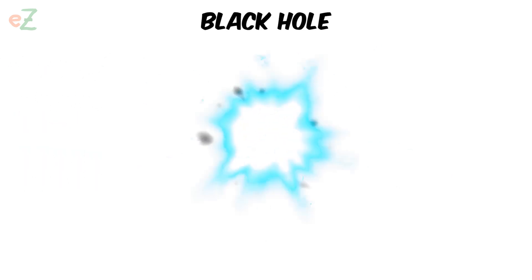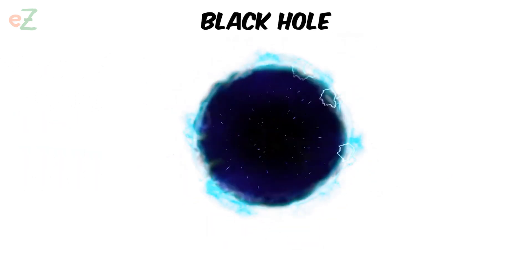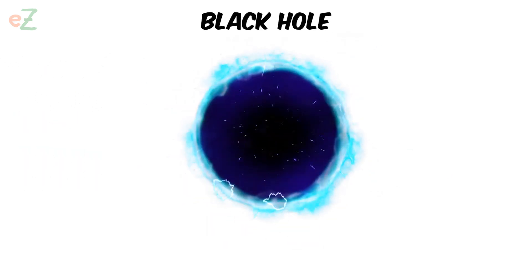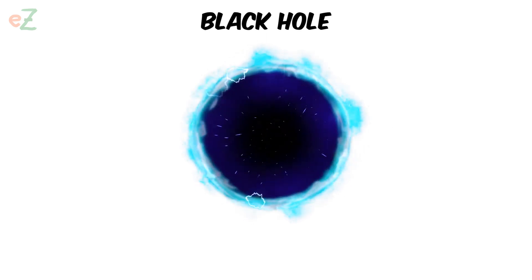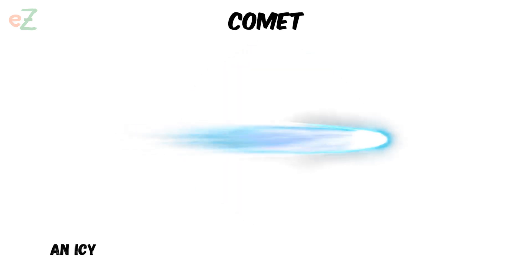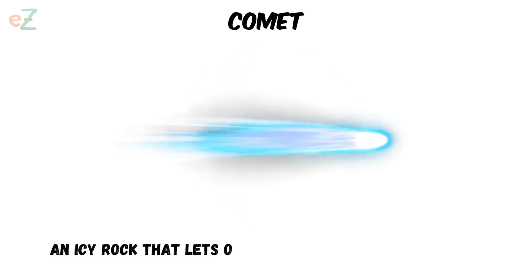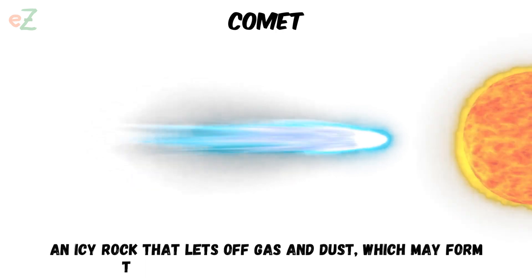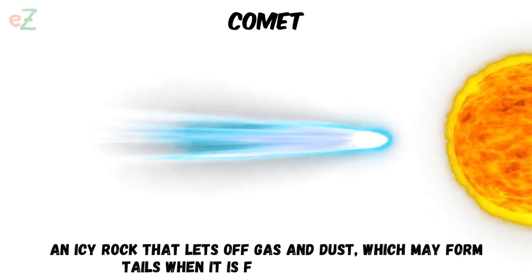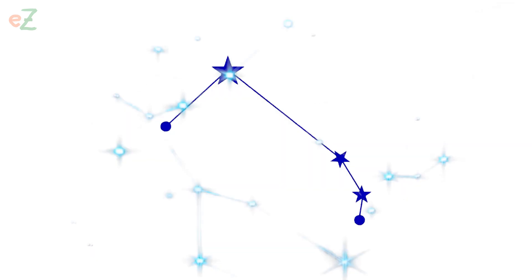Black hole. A place in space where matter and light cannot escape if they fall in. Comet. An icy rock that lets off gas and dust, which may form tails when it is flying close to a sun.